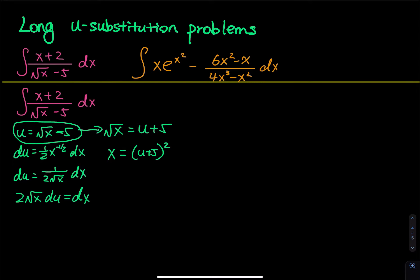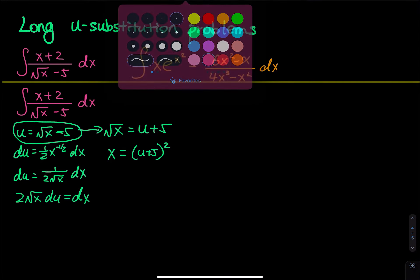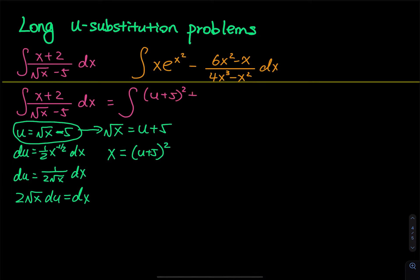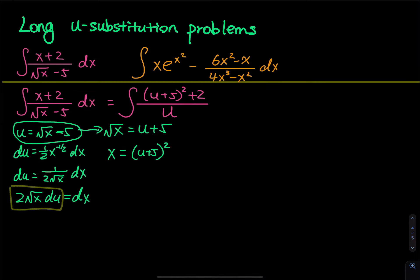Now let's do the rewrite. This integral becomes: x plus 2, where x is now u plus 5 squared, plus 2, and the denominator is just u. The dx is 2 root x du.